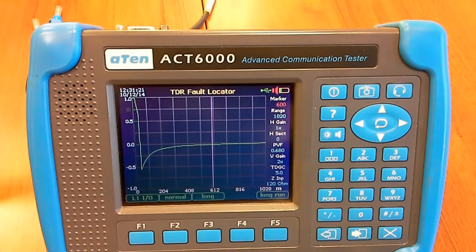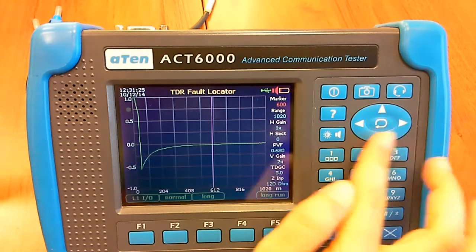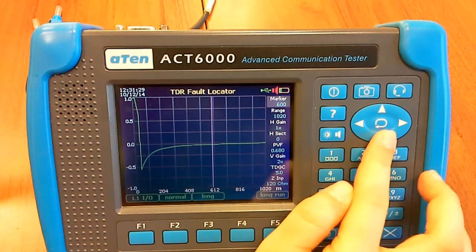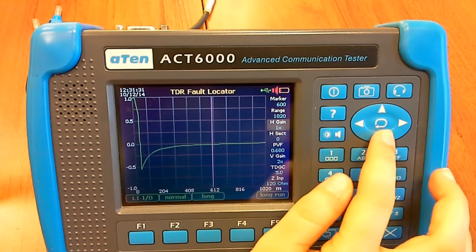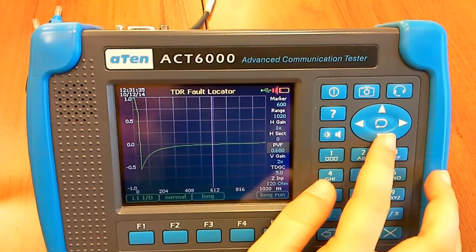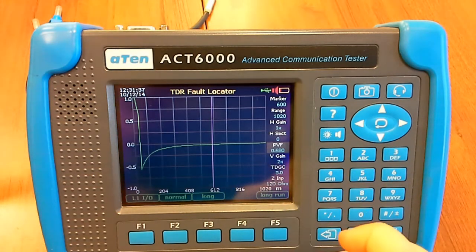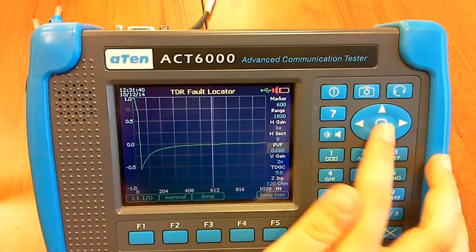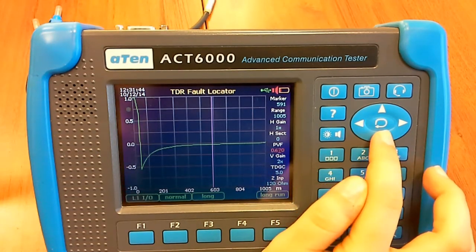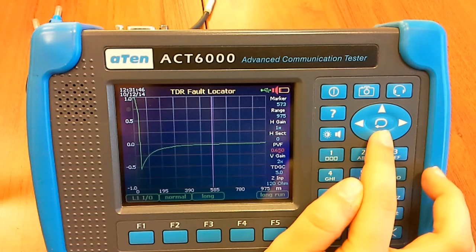Now we have to set the right PVF. From here, using the arrows, we go to PVF. Now it's set to 618, and now we can change it: 16, 15, 14, OK.